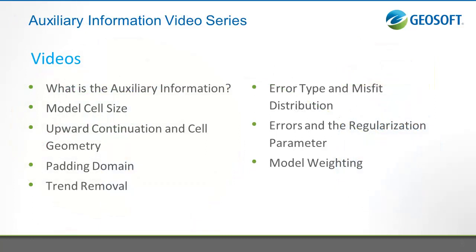The next series of videos are excerpts from the 2013 ASEG Inversion Forum presentation given by Rob Ellis entitled Auxiliary Information in Geophysical Inversion. Their series will investigate the influence of, and best practices surrounding, model cell size, upward continuation and cell geometry, the padding domain, trend removal, error type and misfit distribution, errors and the regularization parameter, and finally, model weighting.